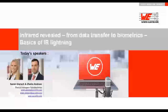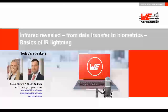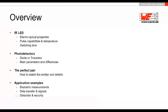I will start with a short overview of today's topic. We will begin with a basic infrared LED introduction — what infrared LEDs are, their electro-optical properties, and pulsing and switching. Then I'll cover photo detector basics: what a photo detector is and the difference between a diode and transistor. After a short overview of matching an infrared emitter and detector, I'll finish with some application examples developed in our lab.